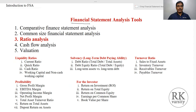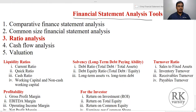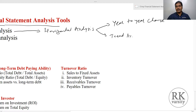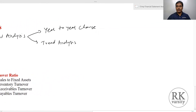Here are the 5 important financial statement analysis tools. The first one is comparative financial statement analysis, which is also called as horizontal analysis. Horizontal analysis is of two types: one is year-to-year change and second one is trend analysis. In case of year-to-year change, what we do is we will try to find out the change in the values from different years — that is one year to another year.